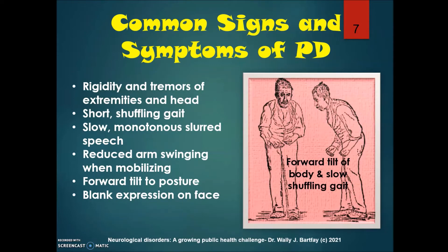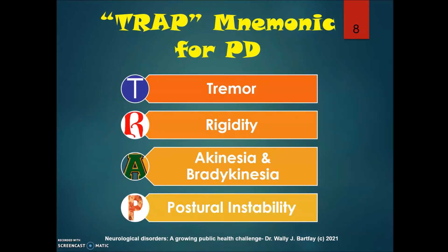Common signs and symptoms of Parkinson's disease include rigidity and tremors in the extremities and of the head, a mild shaking of the head, very short shuffling gait, slow, monotonous, slurred speech, reduced arm swinging when mobilizing, a forward tilt to posture, and a blank stare or blank expression on the face. TRAP is a mnemonic for remembering symptoms: tremor, rigidity, akinesia and bradykinesia, and postural instability.